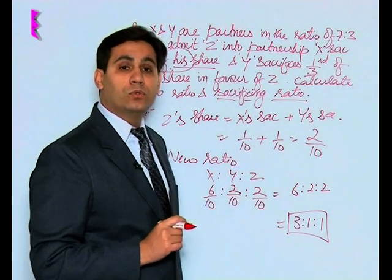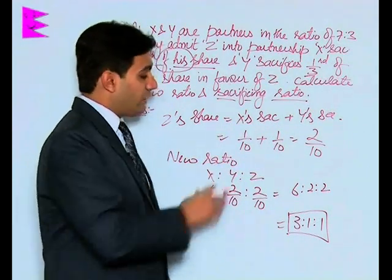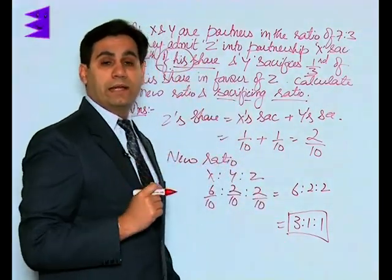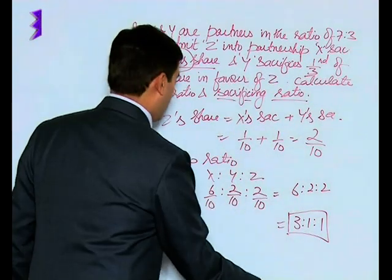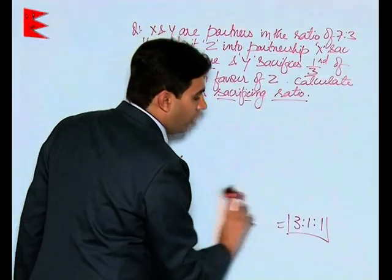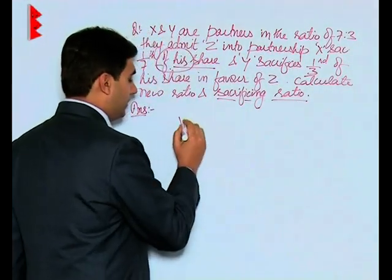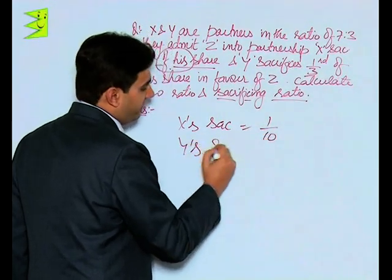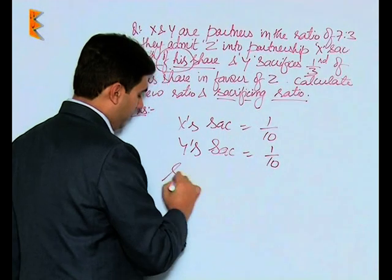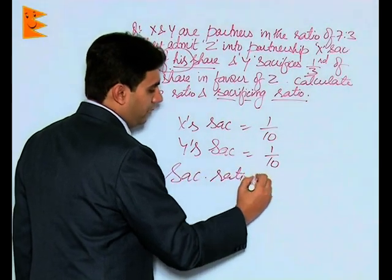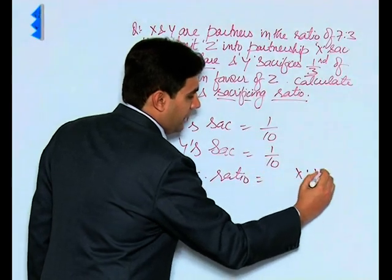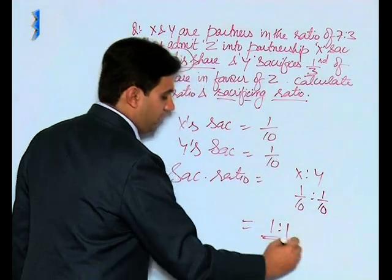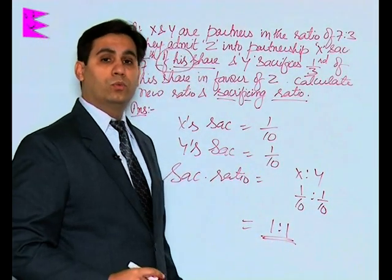We are also required to calculate the sacrificing ratio. We know that sacrifice equals old share minus new share. In this question, we had already calculated the sacrifices: X's sacrifice was 1/10th and Y's sacrifice was also 1/10th. So the sacrificing ratio for X and Y is 1/10 : 1/10. Since 10 is the common denominator, it can be removed, and the sacrificing ratio is 1:1.